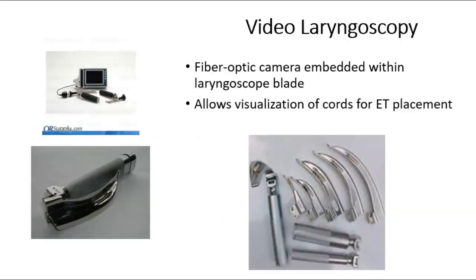Now let's talk about the actual intubation of a patient. Most places now use video laryngoscopy — the GlideScope allows us to see and record while doing it. The laryngoscope comes in different handles and blade sizes. The curved blades are called Mac blades and the straight ones are called Miller. I remember Mac blades being curved because they're like a Macintosh apple.